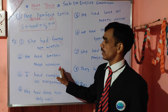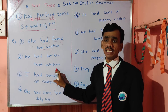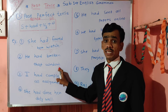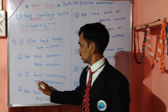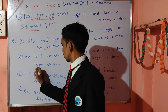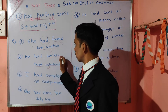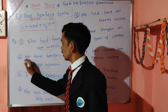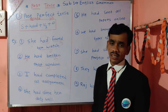Next example: He had broken that window. Taineti khidki broken keli hoti — broken means totally destroyed. So that window is the object here, broken is V3, and he is the subject.